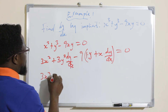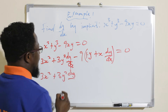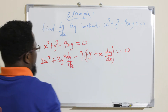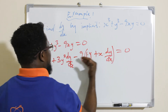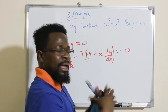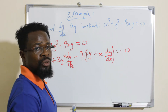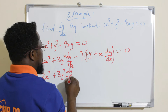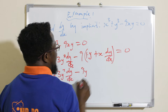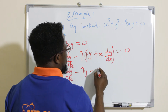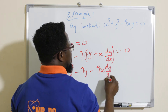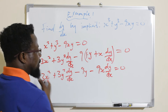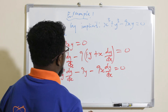So this gives us 3x² + 3y² · dy/dx. Expanding the −9xy term: keeping y constant gives −9y, and keeping x constant gives −9x · dy/dx. We now have dy/dx appearing in two places, so we collect like terms.